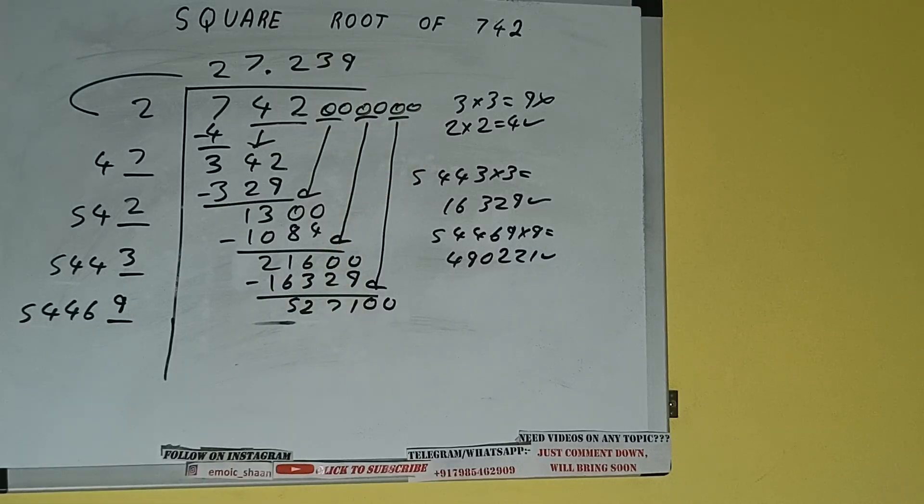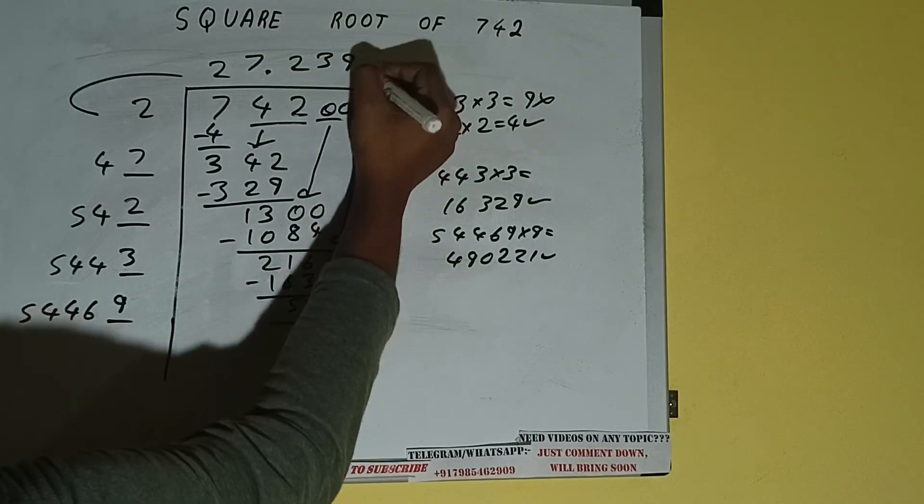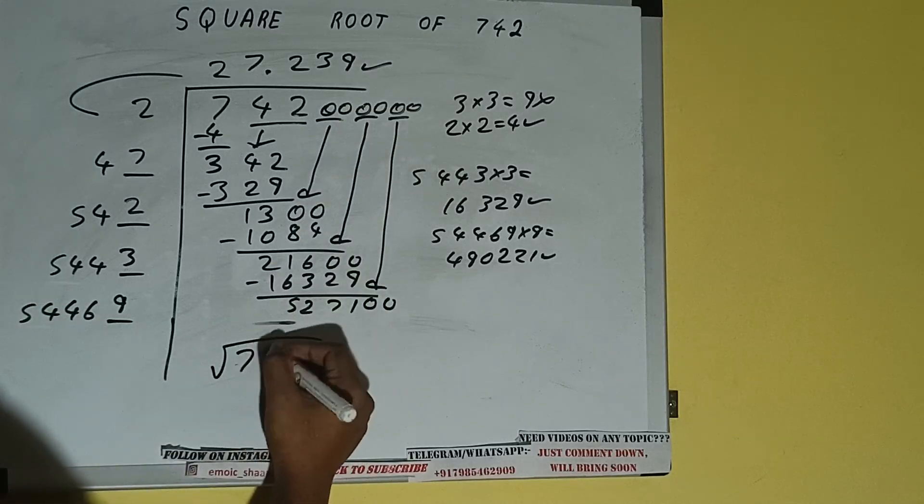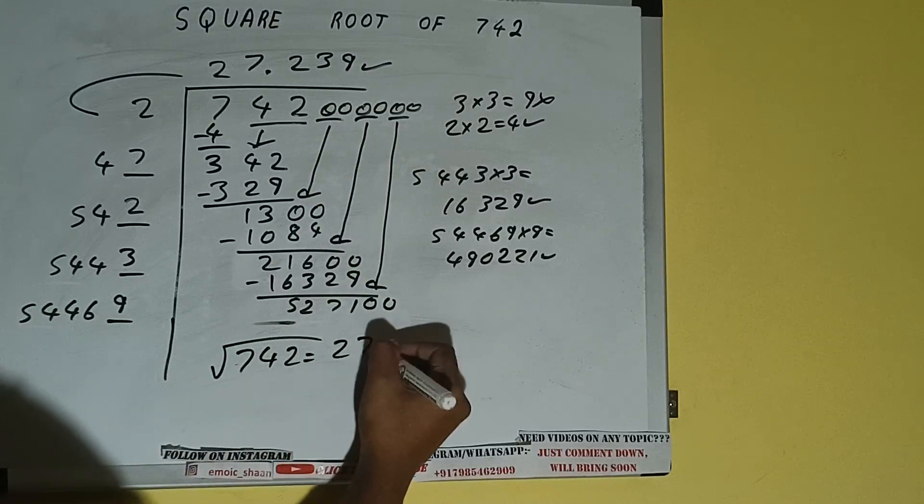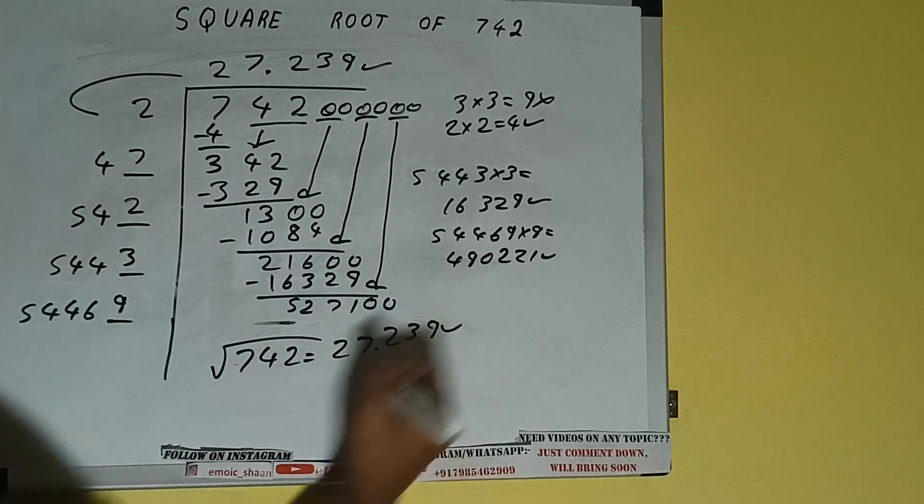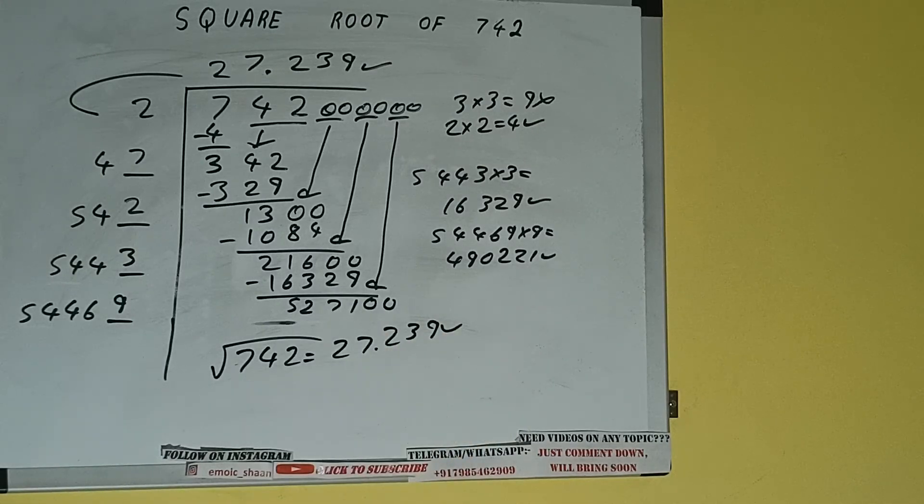So 9 here and 9 here, but we don't need to calculate because we got the answer correct up to three decimal places. So square root of 742 will be 27.239, that will be the answer. This is all about square root of 742. If you found the video helpful please do hit the like button, do consider subscribing and thanks for watching.